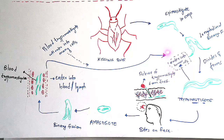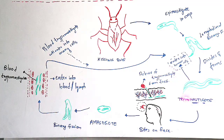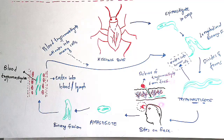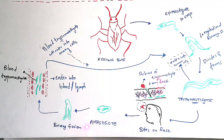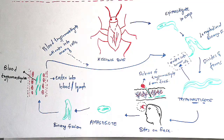As the trypomastigotes enter into other human cells, the total cycle repeats. The kissing bug bites the skin of the man again, the fecal matter containing trypomastigotes enters the blood, the flagella are lost, and it transforms into an amastigote. The amastigote again undergoes longitudinal binary fission, daughter individuals form, enter the blood as blood trypomastigotes, then re-enter human cells — and the total life cycle begins again.